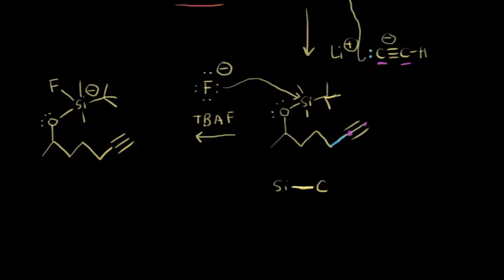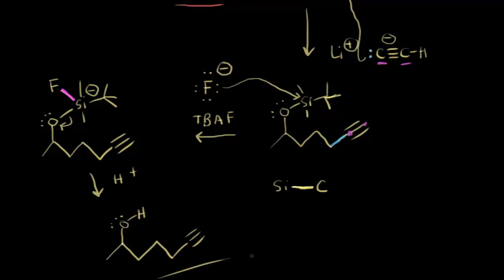Another reason why fluoride can attack the silicon very well is that the bond that forms between fluorine and silicon is very strong. We finish by kicking these electrons back onto the oxygen and protonating to form our target compound — we get back our alcohol. We also successfully added on the desired portion of the molecule, and we form the fluorine bonded to silicon as a byproduct. We selectively removed our protecting group and formed our target compound. The idea of a protecting group is that it allows you to protect one area of the molecule, react with another area, and then easily remove it to get back your target molecule.